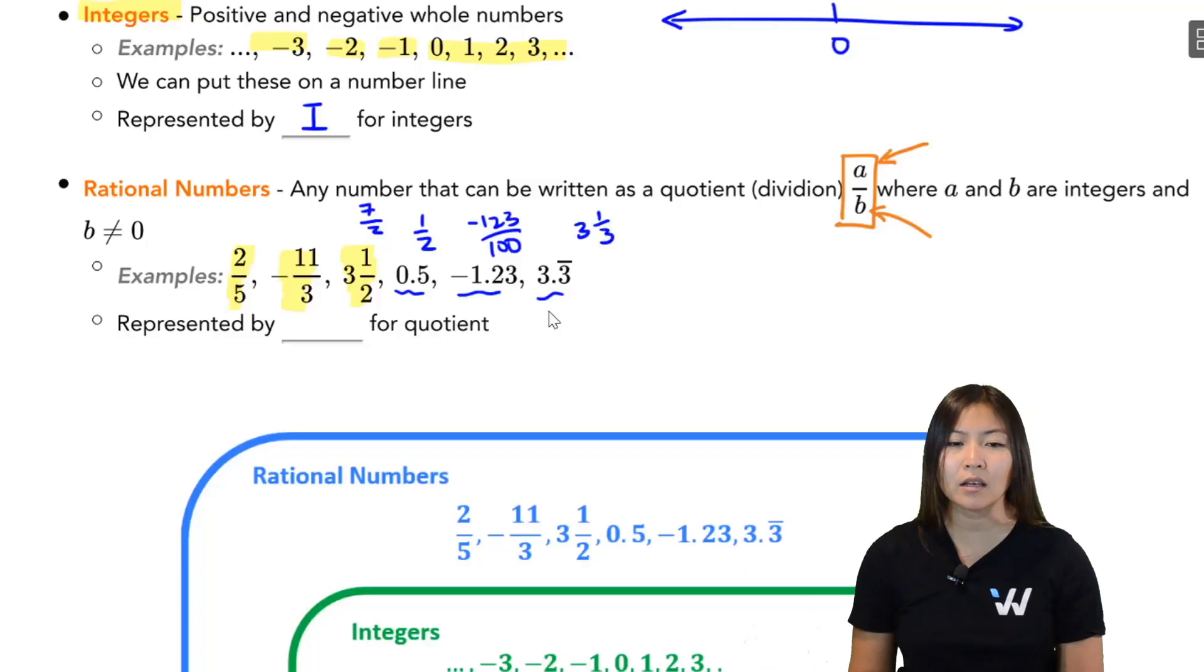Now you might be thinking, okay, rational numbers starts with an R. Maybe it's represented by the letter R. That's where they trick you. Another way for writing fractions or divisions is using the word quotient. So quotient is just a fancy way of saying you're dividing two things, you get a fraction. So since quotient starts with a Q, rational numbers actually are represented by the letter Q, the symbol Q.